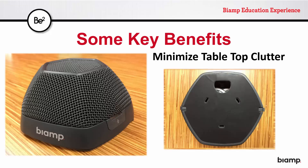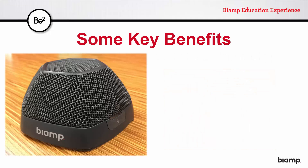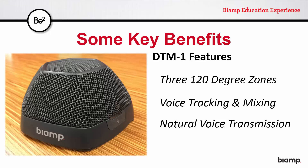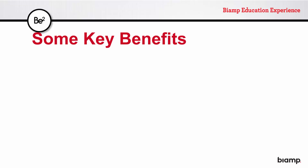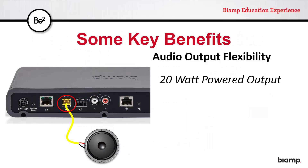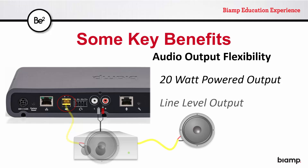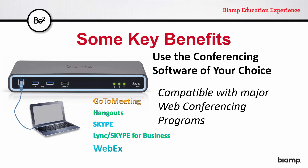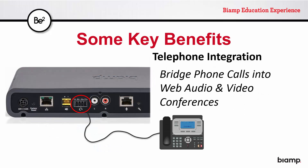The DTM-1's mounting options allow its cable to be routed through the table, further minimizing clutter. The beam-forming DTM-1 tracks the loudest voice in each of its three zones, mixing them together for the most natural voice transmission, doing the job of multiple microphones in a single compact package. The CR1 is a USB hub with three additional USB ports for expanding connectivity. Audio outputs include both an amplified output for connection directly to a passive speaker, and a line-level output for connection to an external amplifier or powered speaker. It allows your choice of compatible conferencing software, and there is an option for telephone integration, allowing bridging of a phone call into your web conference so all parties can hear each other.